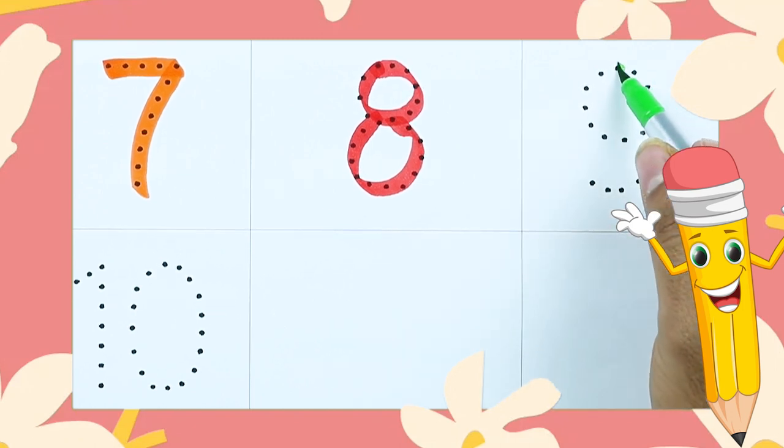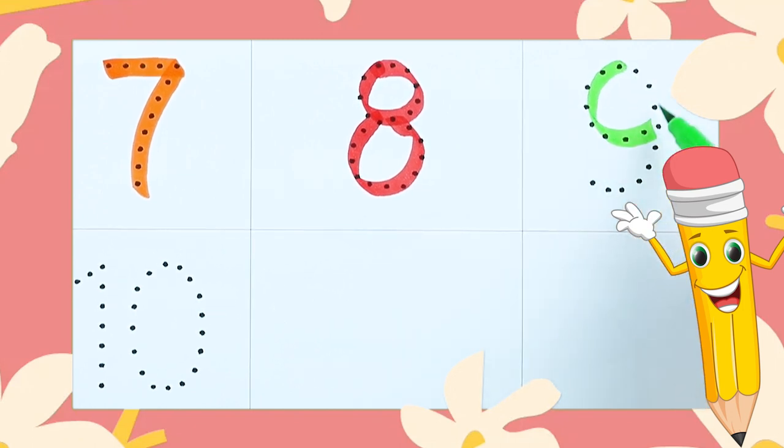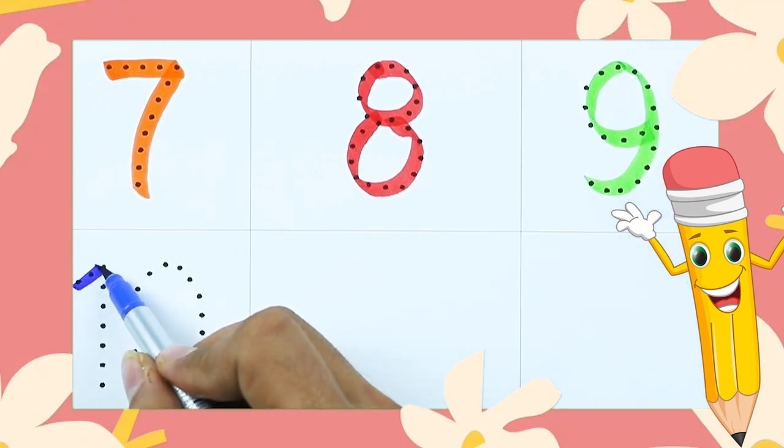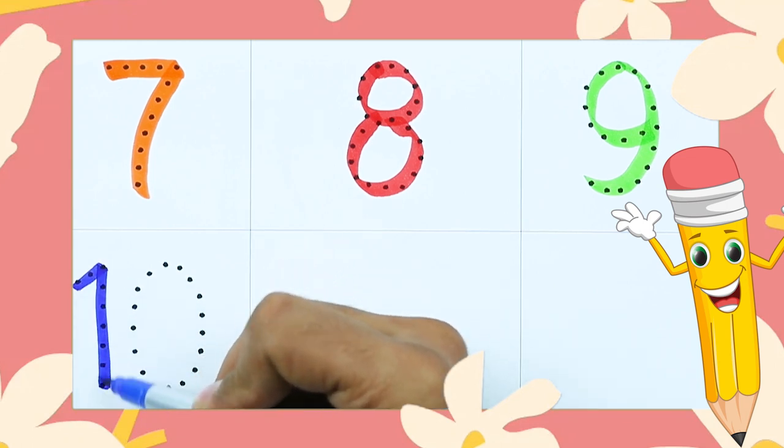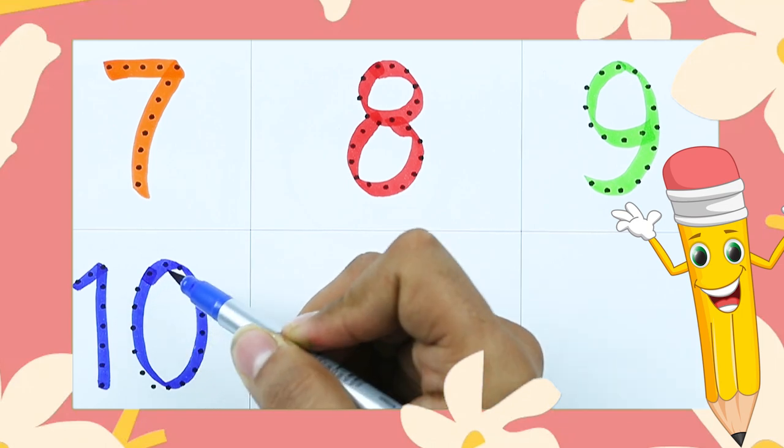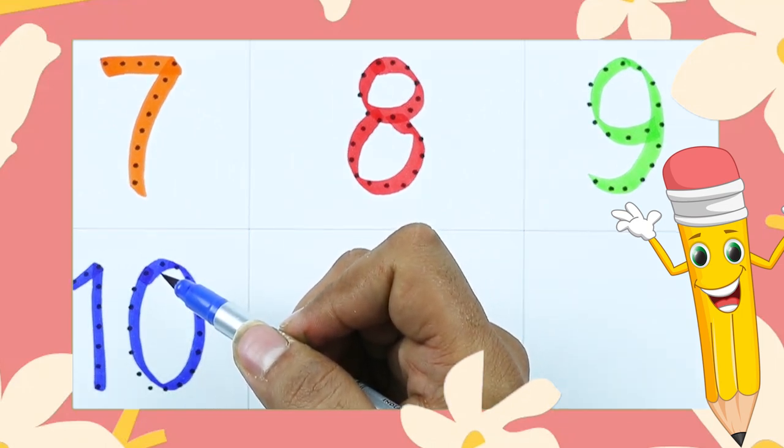Number 9 with green color. It's number 9. Number 10, 1 and 0. It's number 10 with blue color. Thank you for watching.